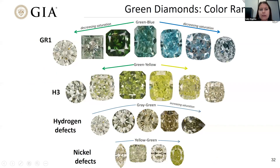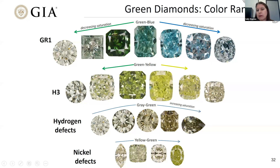The color ranges vary by cause. For GR1s, we can see very vibrant green, with decreasing saturation as defect concentration decreases. If there's no nitrogen-related absorption in the blue — for example, an irradiated type 2A — then instead of a green transmission window, it shifts to the blue, producing a greenish-blue or bluish-green color. For H3, the color ranges from greenish-yellow to yellowish-green depending on concentration and the relative balance of absorption and fluorescence. For hydrogen and nickel-related defects, increasing defect concentration generally produces increasing saturation.